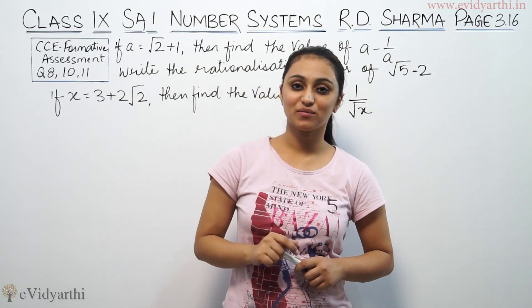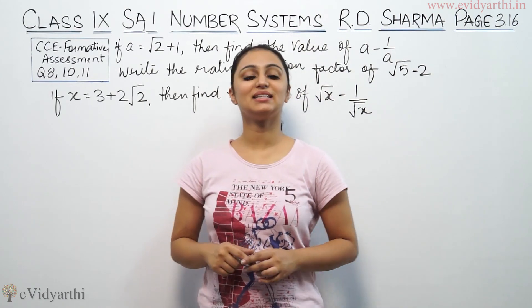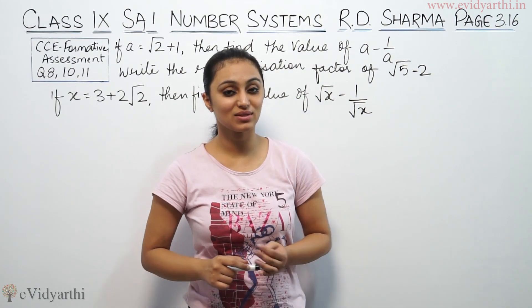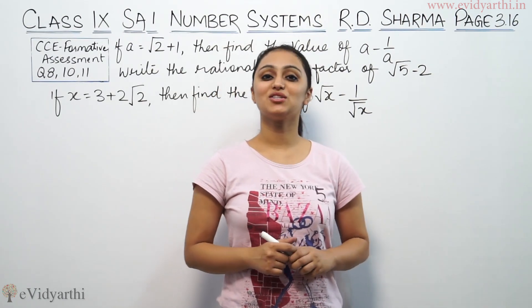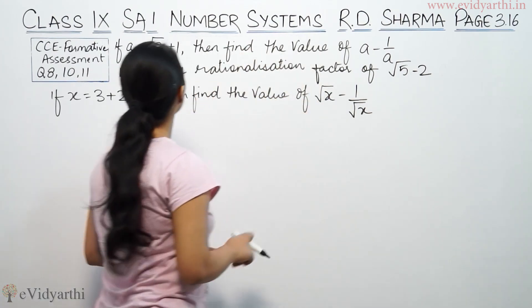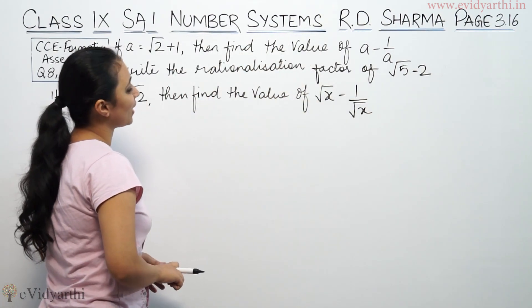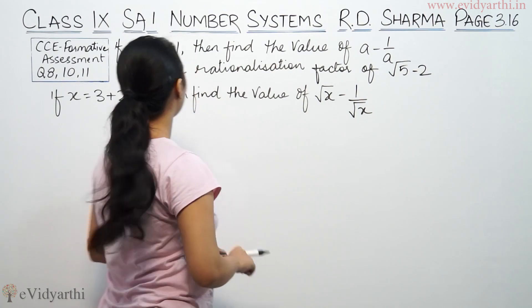Hi, this is Khushpu with another question of number system. This is question number 8, 10 and 11 from CC for Medic Assessment of R.D. Sharma page number 3.16, which says if a is equal to root 2 plus 1, then find the value of a minus 1 by a.